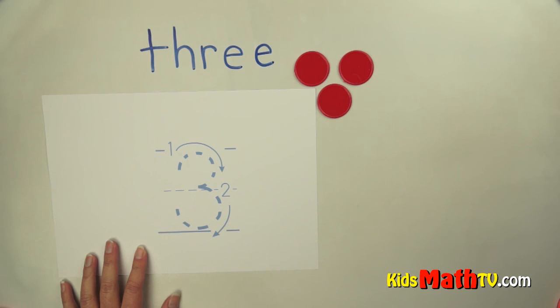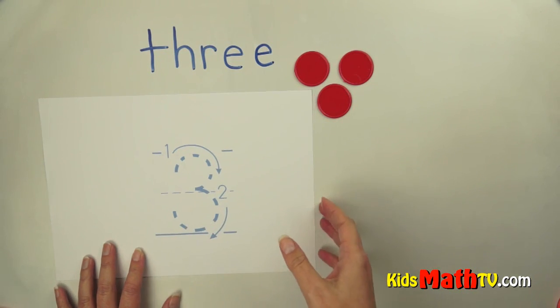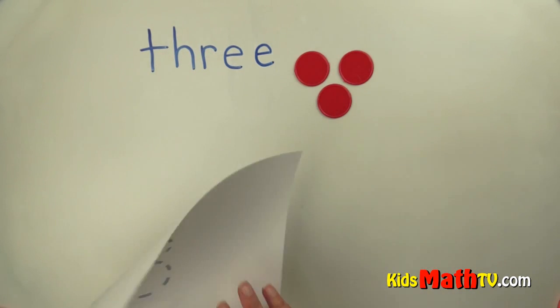One, two for the three. There are two strokes. Let's try writing the number three.